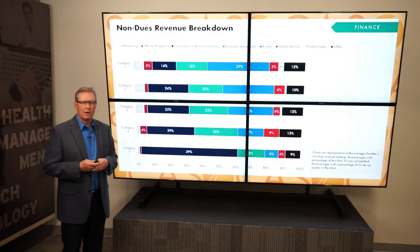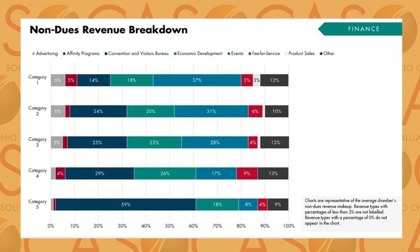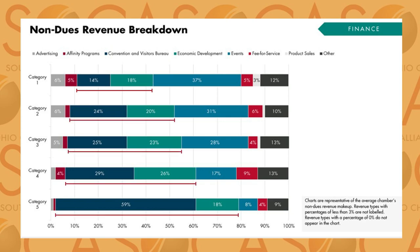So where does the non-dues revenue come from? As you can see, about 37% of the non-dues revenue comes from chamber events in category 1. The bigger the chamber, the more that event revenue decreased among the respondents. Also in category 1, 32% of the revenue among the respondents was derived from the local convention and visitors bureau and the economic development organization, and those percentages increased as the chamber increased.